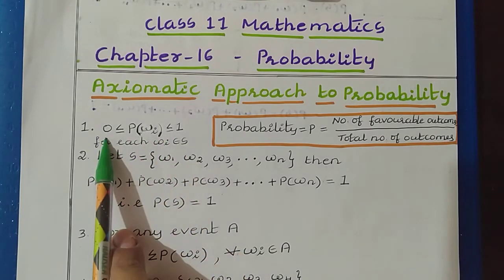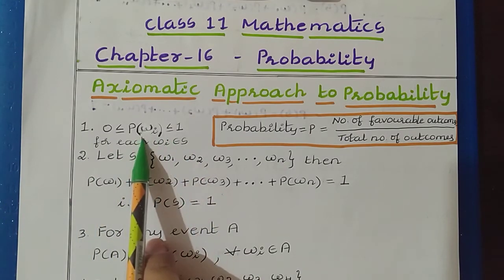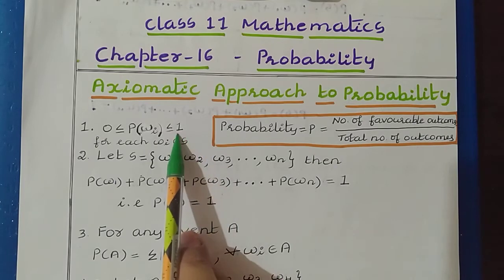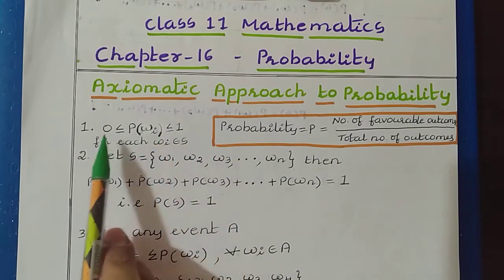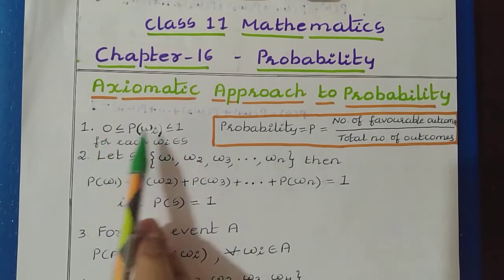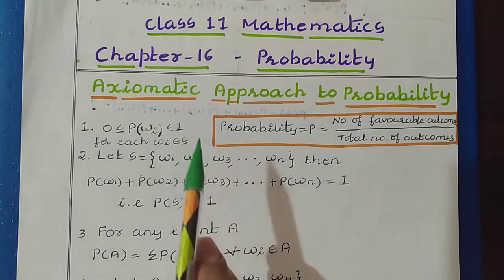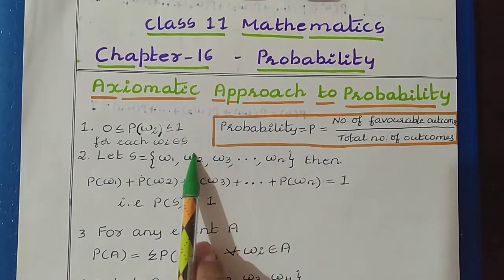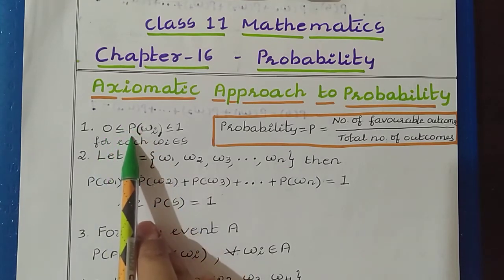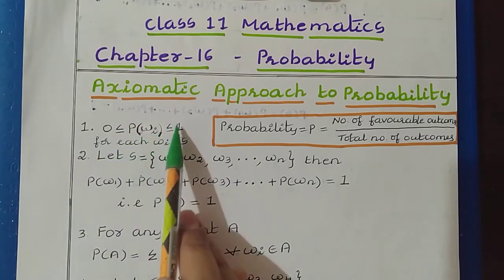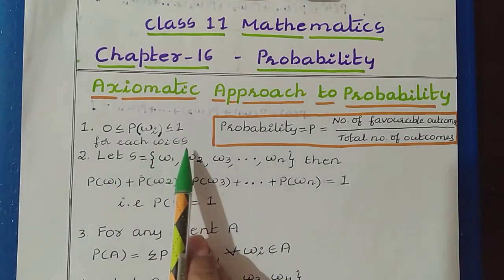The probability value cannot be a negative number. Similarly, the probability value of the event cannot be greater than 1. It is equal to 1, or it is equal to 0, or the value is in between 0 to 1. This is the first rule we have related to probability. So here it is given: 0 ≤ P(ωi) ≤ 1, for each ωi belonging to S.